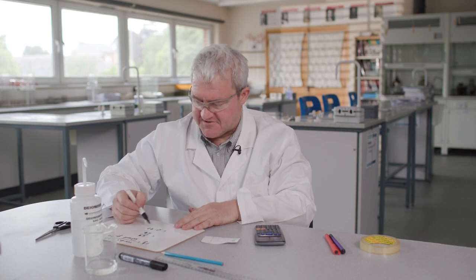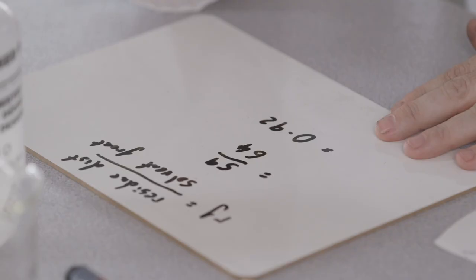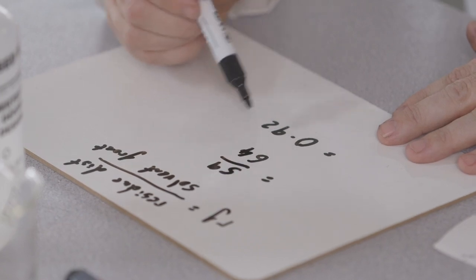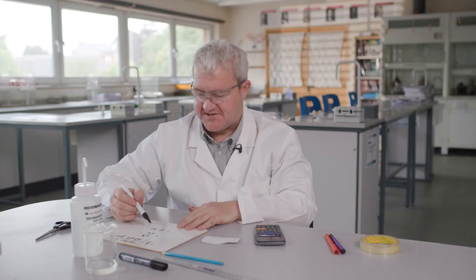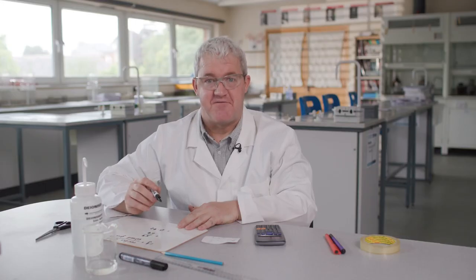Now there are no units on an RF value. That's because you're dividing millimeters by millimeters. And if you're looking at your significant figures, it's important that the same significant figures are used as are in the measurements. So I'll give my answer to two significant figures.